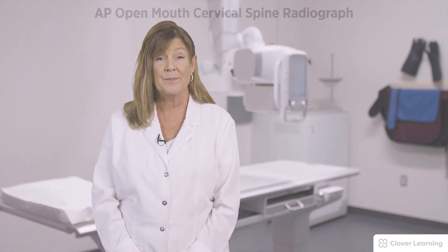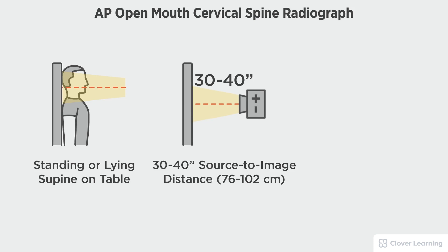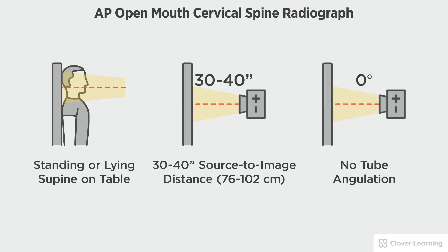In this view we will be demonstrating the AP open mouth cervical spine. The AP open mouth cervical spine should be performed with the patient standing at the upright bucky or lying on the table. A 30 to 40 inch source to image distance is recommended with no tube angulation.